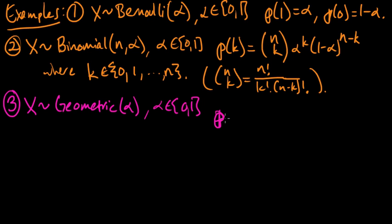And this has PMF P of k equals 1 minus alpha to the k minus 1 times alpha, where k is a positive integer, 1, 2, 3, 4, etc., all the way up to infinity.